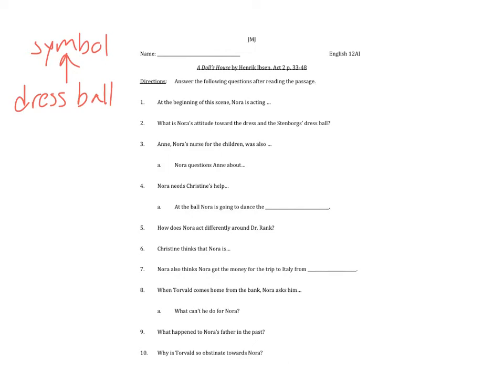Nora is talking to Anne, her nurse, and she's got this big dress ball that she's going to with her husband. The dress ball is a symbol — make sure to note that down. It's a symbol of them getting dressed up and almost performing as the perfect couple. Nora knows that Torvald wants to go, but she doesn't want to go, and she's even thinking about ripping up her dress. That dress is another symbol of Nora acting as a doll performing for her husband.